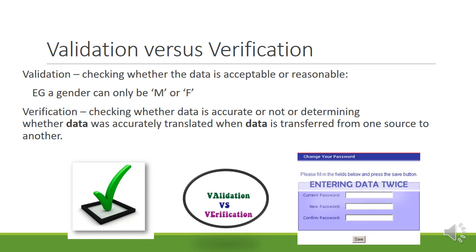Verification means that we check whether data is accurate or not. We determine whether the data was accurately translated when it is transferred from one source to another. This means when the data is being inputted, it is entered twice, or we do certain things to make double sure that the data has been entered accurately.